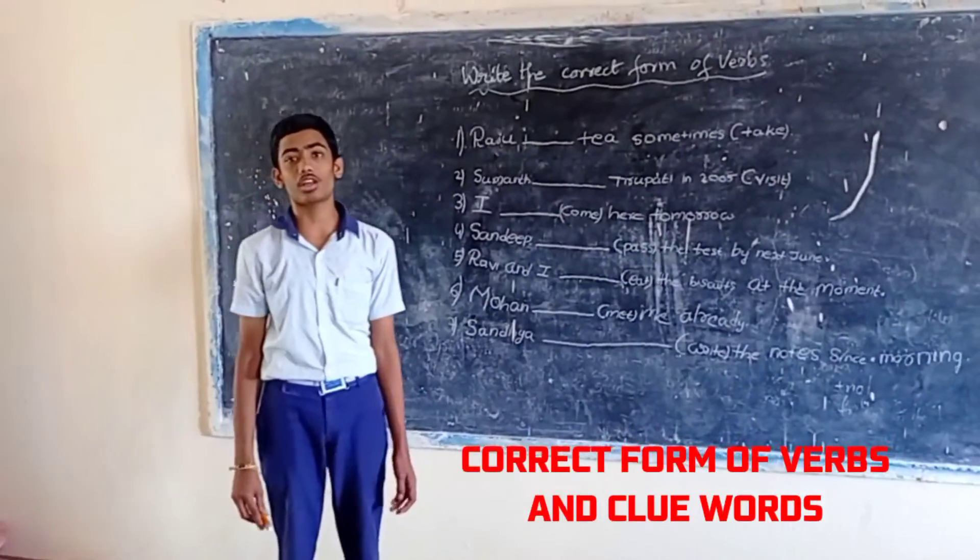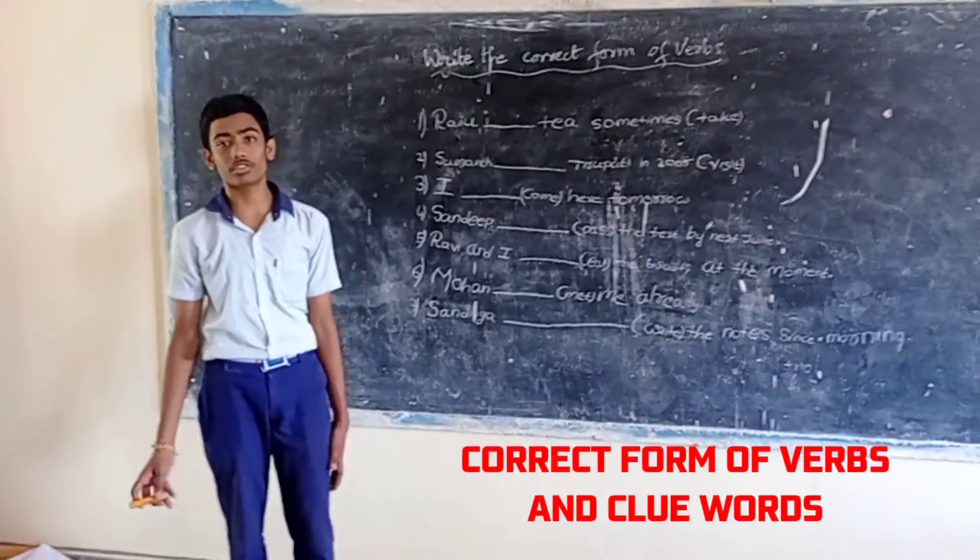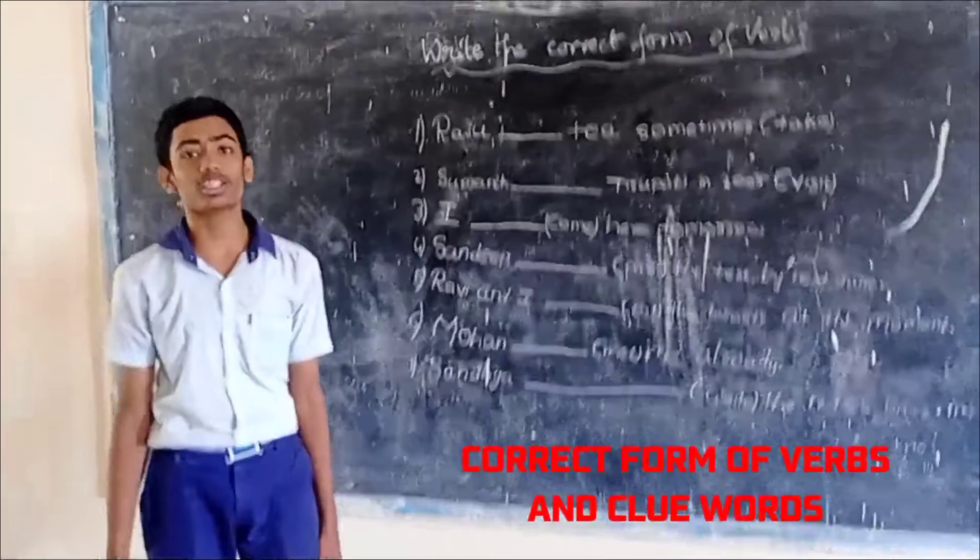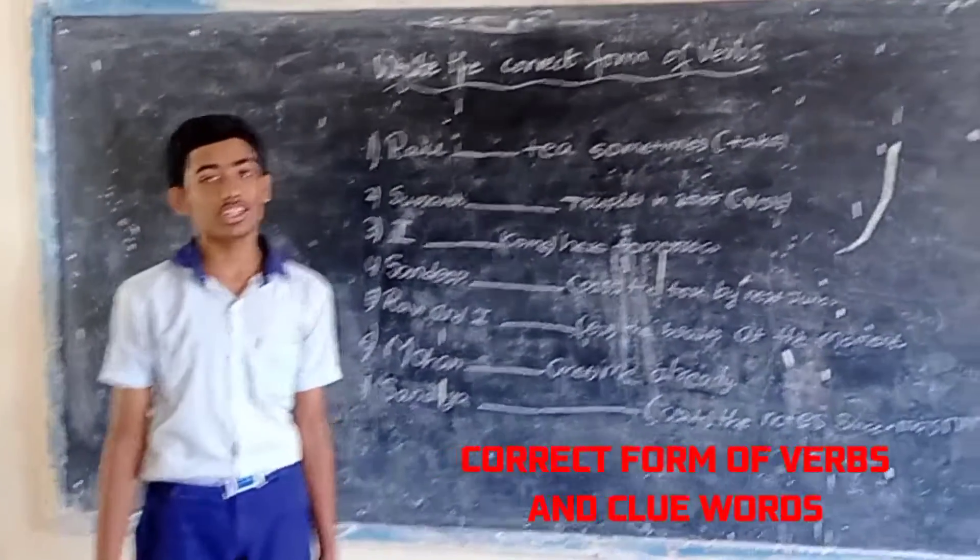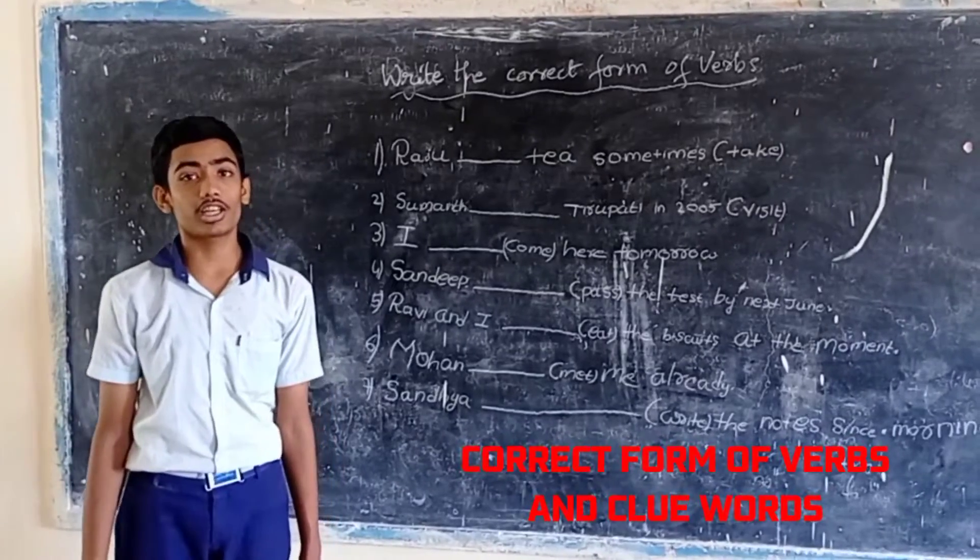Simple past: last year, last week, last month, last day, in 2005. These are the clue words of simple past. Tomorrow, last week, last year, last month, in 2025. These are the clue words for simple future.